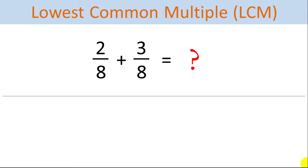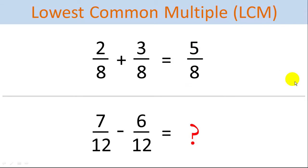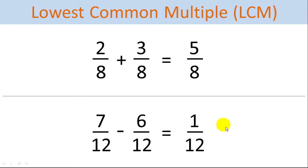Let's look at an example: 2 eighths plus 3 eighths. These numbers are really easy to add because they both have 8 for the denominator. To add 2 eighths plus 3 eighths, we simply add the numerators and keep the denominator — 5 eighths. Another example: 7 twelfths minus 6 twelfths. Since both numbers have the same denominator, we can simply subtract 7 minus 6 and we get 1 twelfth.